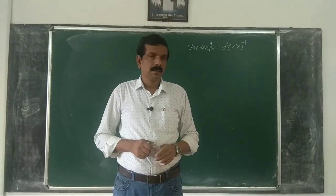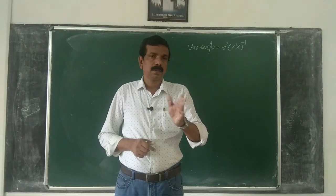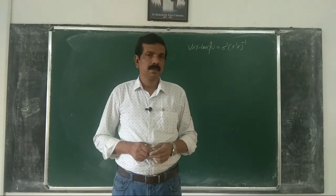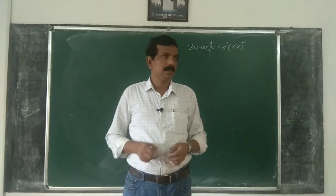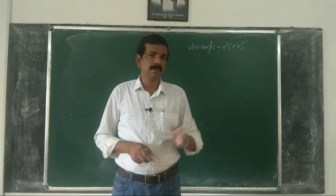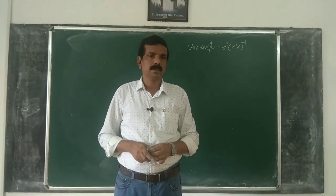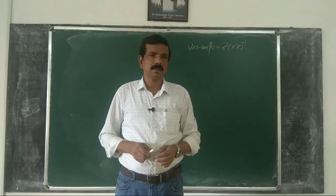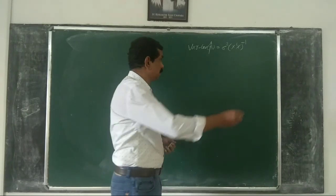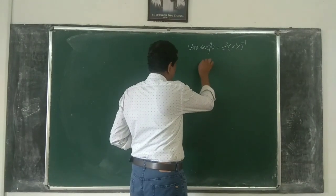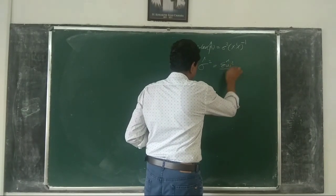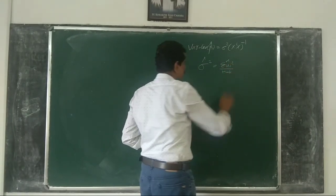Sigma squared is the variance of the error term. As the error term is unknown, we cannot directly calculate it. So what we do is calculate an unbiased estimate of sigma squared as sigma-hat squared equals the sum of u-hat_i squared divided by n minus k, for the k-variable model.